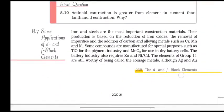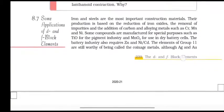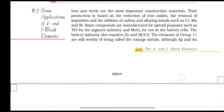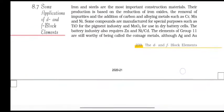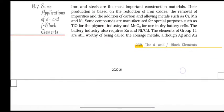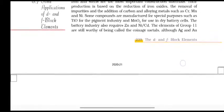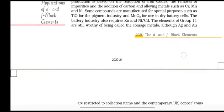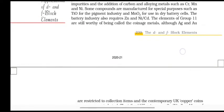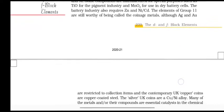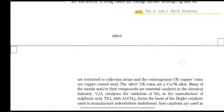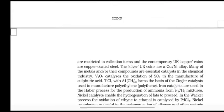Some applications of d-block elements: iron and steel are the most important construction materials. Their production is based on the reduction of iron oxides, the removal of impurities, and addition of carbon and alloy metals such as chromium, manganese, and nickel. Some compounds are manufactured for special purposes such as TiO2 for the pigment industry and MnO2 for use in dry battery cells. The battery industry requires zinc, nickel, and cadmium. The elements of Group 11 are still worthy of being called the coinage metals, although silver and gold are now restricted to collection items and the contemporary UK copper coins are copper-coated steel. The silver UK coins are a Cu/Ni alloy.